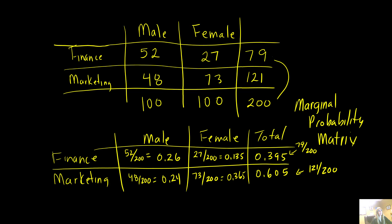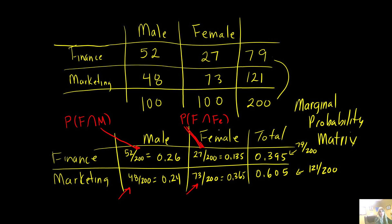The key here is that you understand what each of these values looks like in probability terms. The values within the table are the intersections — so this would be: what's the probability they're finance and they're male? What's the probability they're finance and they're female? And then this would be: what's the probability they're marketing and they're male? And the probability that they're marketing and they're female. We call these the joint probabilities — they represent the intersections.